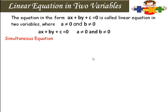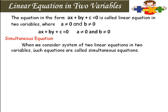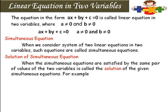Simultaneous equations: when we consider a system of two linear equations in two variables, such equations are called simultaneous equations. That means when we take two equations together, that system is called a simultaneous equation. The solution of a simultaneous equation is when the simultaneous equations are satisfied by the same pair of values of the two variables.